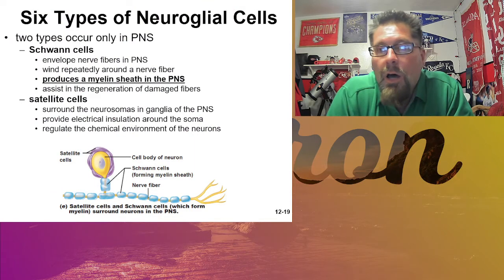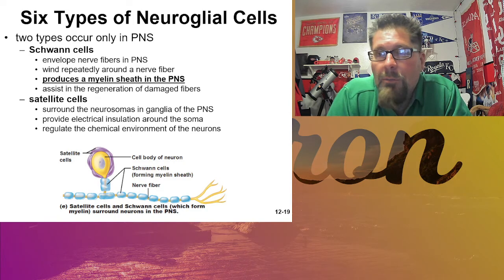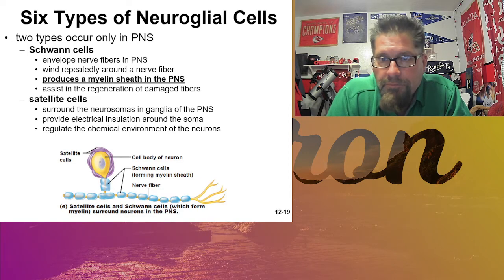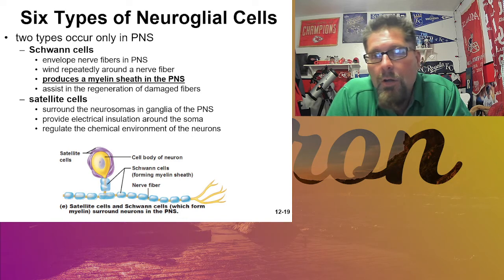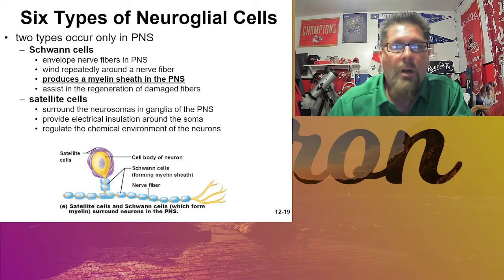Now for the second group — the two types found in the PNS. The Schwann cells are the ones that produce the myelin sheath around the neurons of the peripheral nervous system. The satellite cells are there to provide resources and help the soma and axon keep that electrical signal going — basically anything the neuron might need, the satellite cells are ready to provide. That's our video on neuroglia cells. Next time we're going to be talking about myelin, so we'll see you then.